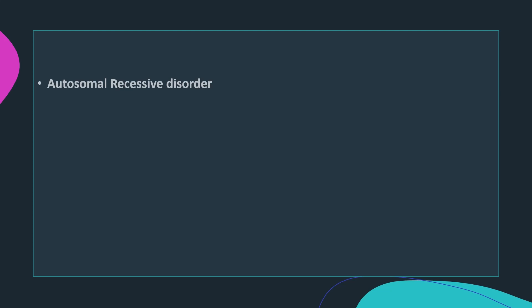Cystic fibrosis is one of the commonest life-threatening autosomal recessive disorders, caused by multiple mutations of a single gene on the long arm of chromosome 7. The most common mutation is the deletion of phenylalanine at position 508, so-called F508, which is responsible for about 70% of all cases of cystic fibrosis.